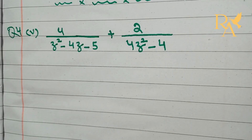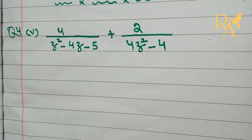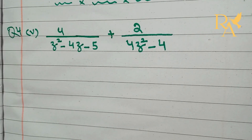Now, we will solve question 4 of 5. The expression is 4 upon z square minus 4z minus 5, plus 2 upon 4z square minus 4.